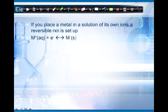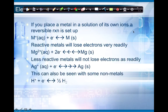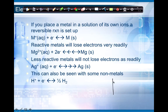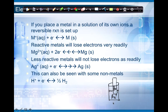If I were to take a metal, a strip of metal, and place it into a solution of its own ions, I set up an equilibrium system. For example, I can take a piece of gold and put it into a beaker of its own ions. I have a piece of gold with an oxidation number of zero, and I put it into a solution of gold ions. What ends up happening is that it'll go back and forth between being solid gold and an ion.